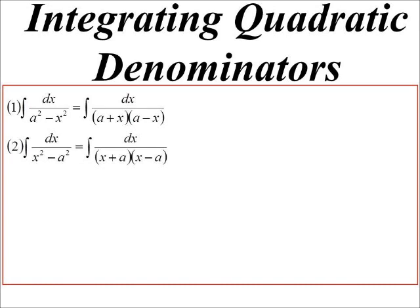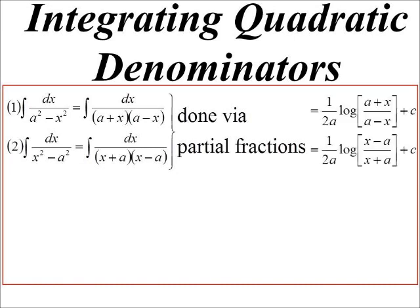So if it can be written as the difference of two squares, so a squared minus x squared or x squared minus a squared, we could of course factorise these and do it via partial fractions. You're better off just memorising these. They are the missing standard integrals if you like. I don't know why they don't put them on the standard integral sheet. They should be there.